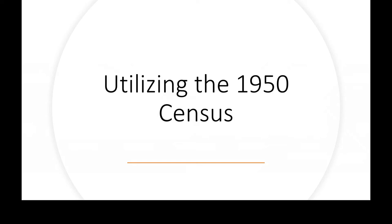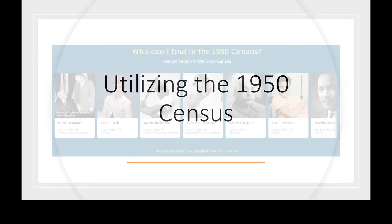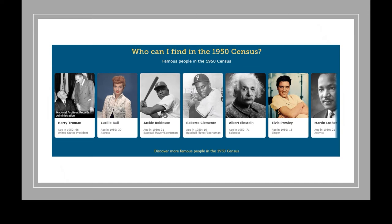Finding famous people is interesting because these were people who may have made an impression on your family. Elvis Presley was 15, knowing the future; Albert Einstein; Roberto Clemente. There's an opportunity to teach or learn social history, even for ourselves or for teaching little ones. That's what's really cool about the 1950 census — although it was 72 years ago, it really is part of our lives and therefore should be part of our descendants' lives.